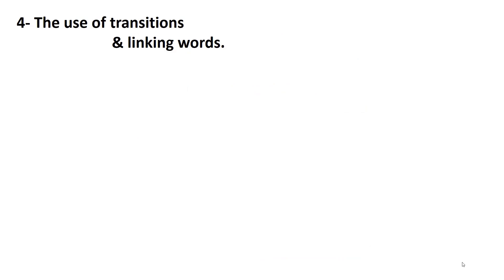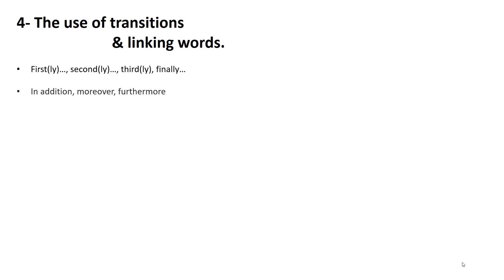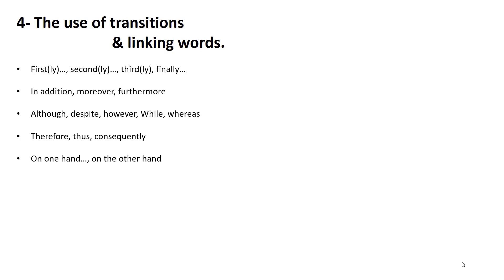Transitions and linking words are words and phrases used to connect ideas. They are significant because they help you develop your ideas logically and make your writing very smooth for the examiner to read. Examples include: 'firstly, secondly, thirdly, and finally' for sequence of events — and note that 'finally' is not for the conclusion; it's for the last reason or last effect, still within the body paragraphs. 'In addition,' 'moreover,' or 'furthermore' are used when adding more information. 'Although,' 'despite,' 'however,' 'while,' and 'whereas' are used for contrast or contradictory ideas. 'Therefore,' 'thus,' and 'consequently' signal a result. 'On one hand / on the other hand' works for two contradictory paragraphs and is very good to start a paragraph with.